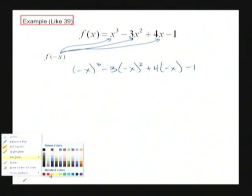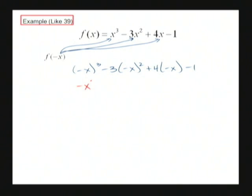And just some simple work there. We'll get negative x to the third because I have a negative here. When I raise it to an odd power, the negative stays. Just like on the previous problem, the negative stayed with the 8. So this becomes negative 3x squared minus 4x minus 1. So that's the value of f of negative x.